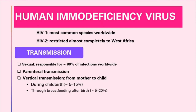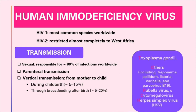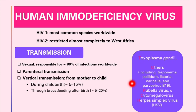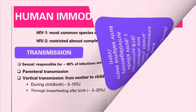HIV is also regarded as one of the TORCH infections. TORCH stands for: Toxoplasma gondii; Others — which include Treponema pallidum, Listeria monocytogenes, Varicella zoster, Parvovirus B19; Rubella virus; Cytomegalovirus; and Herpes simplex virus. Some texts include HIV under 'Others'.